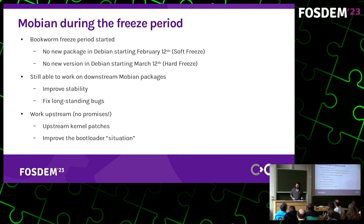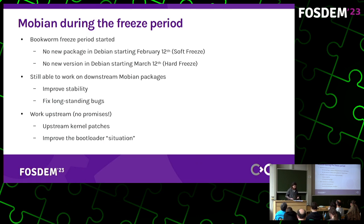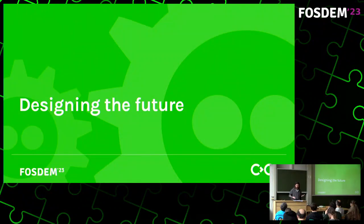During the freeze period — when Debian is being frozen in preparation for stable release — we cannot add new packages starting the 12th of this month, and one month later no updates at all unless bug fixes. But we'll still be able to work on downstream packages to improve stability and fix remaining issues. We also hope, without making promises, to do more upstream work: submitting kernel patches and implementing proper TauBoot support for the Librem 5 and PineTab.